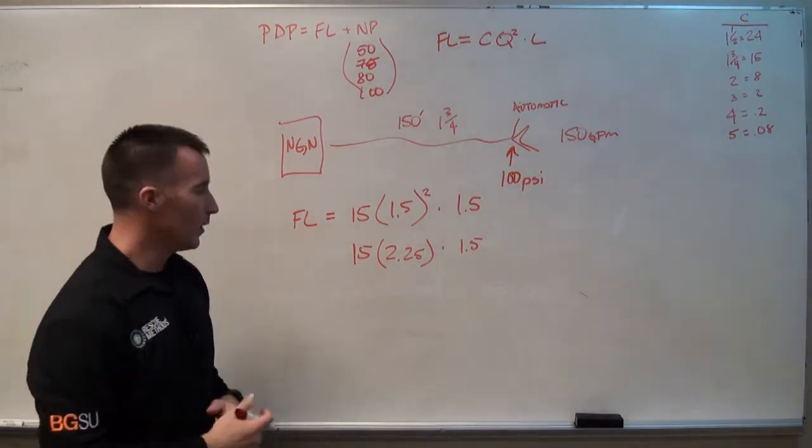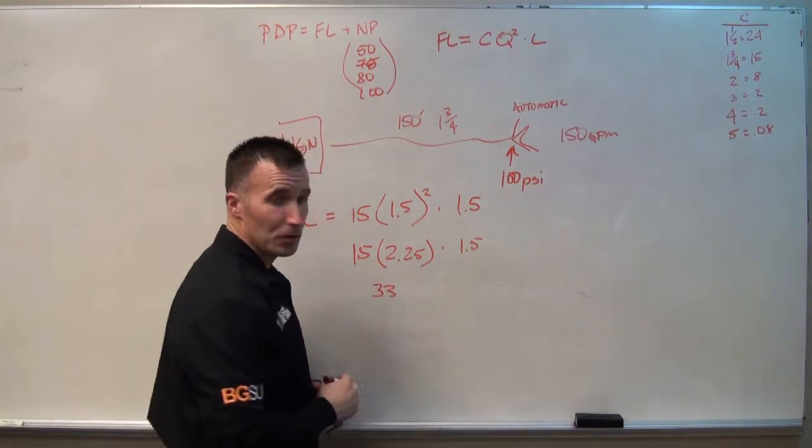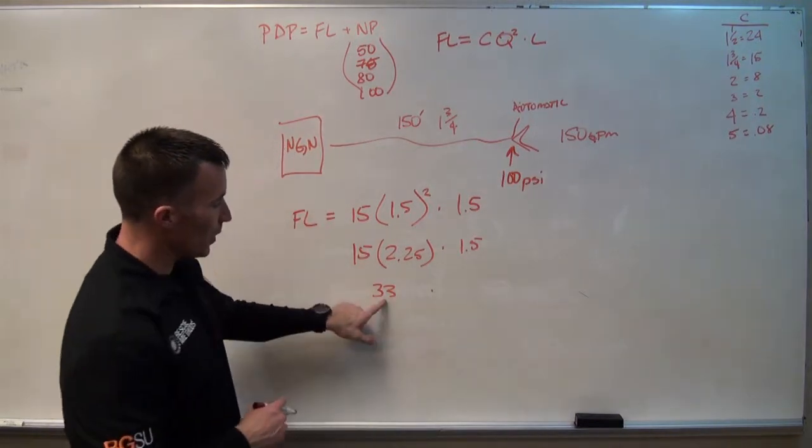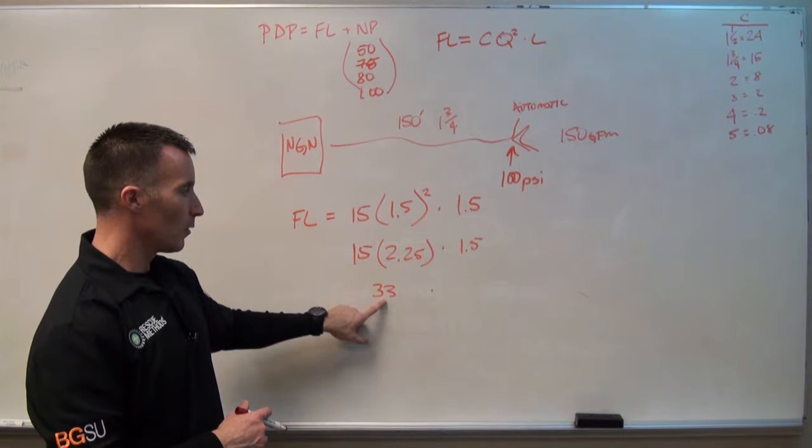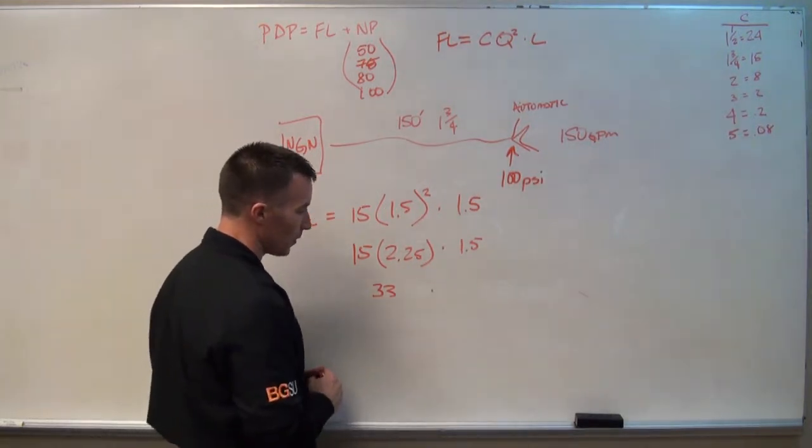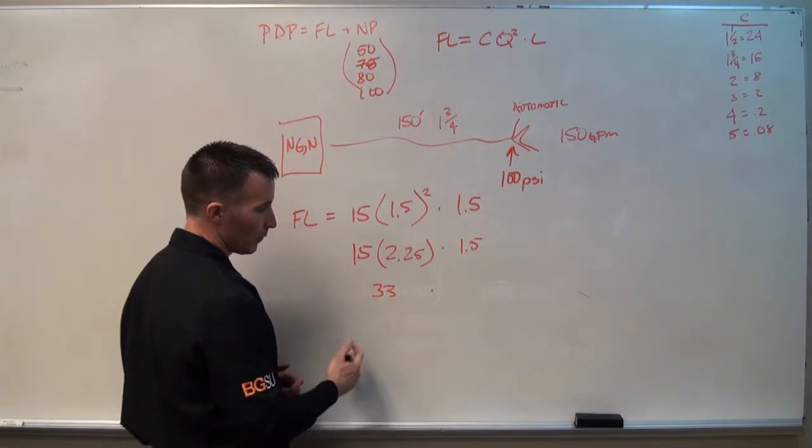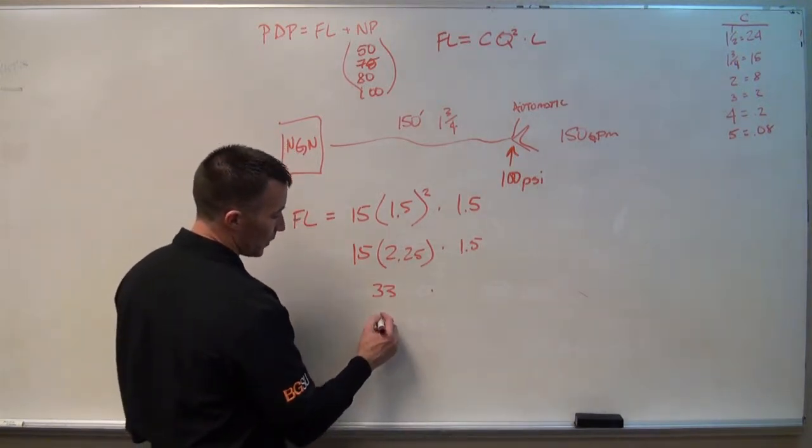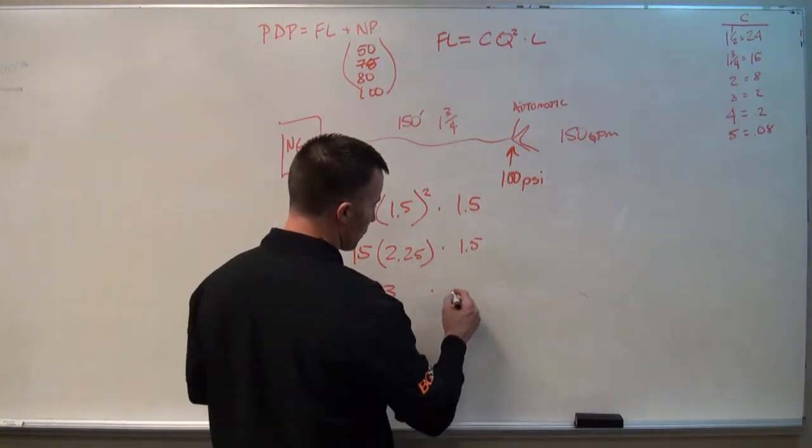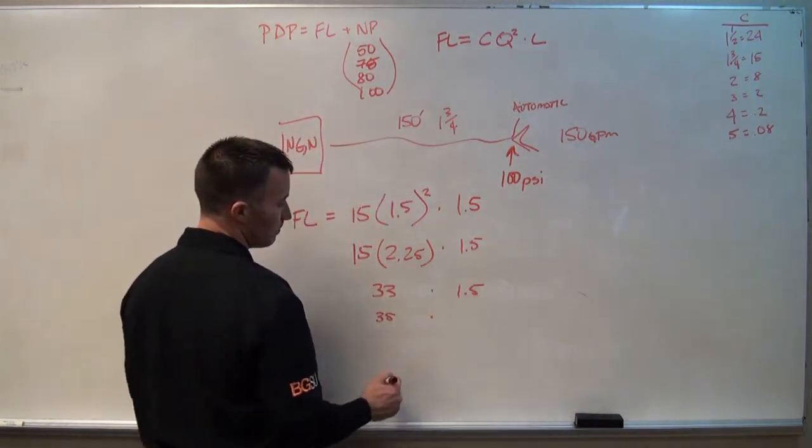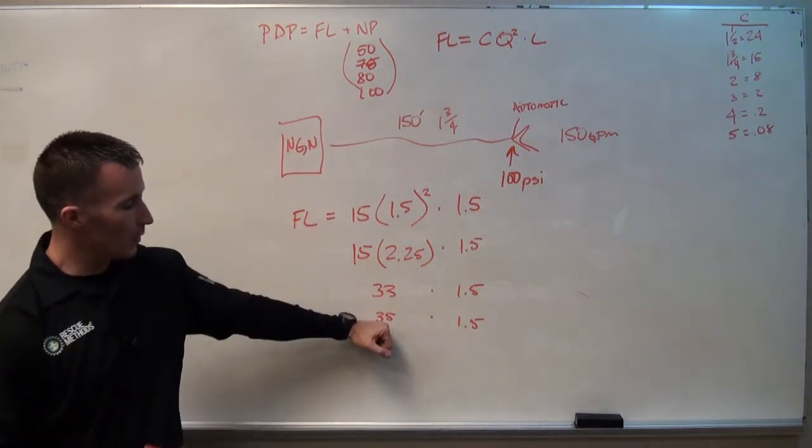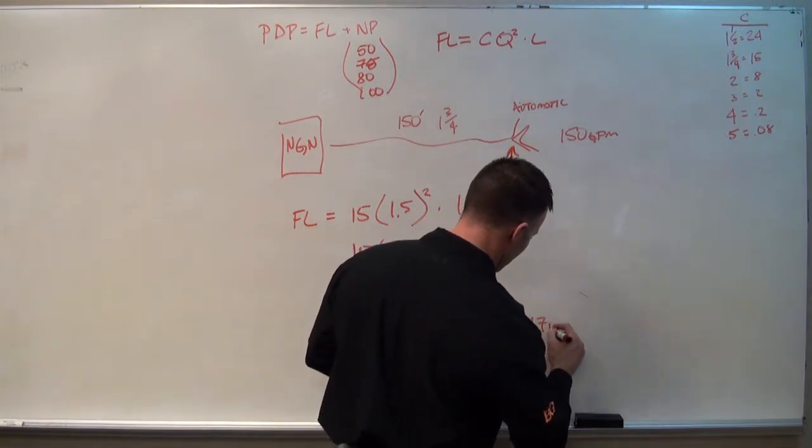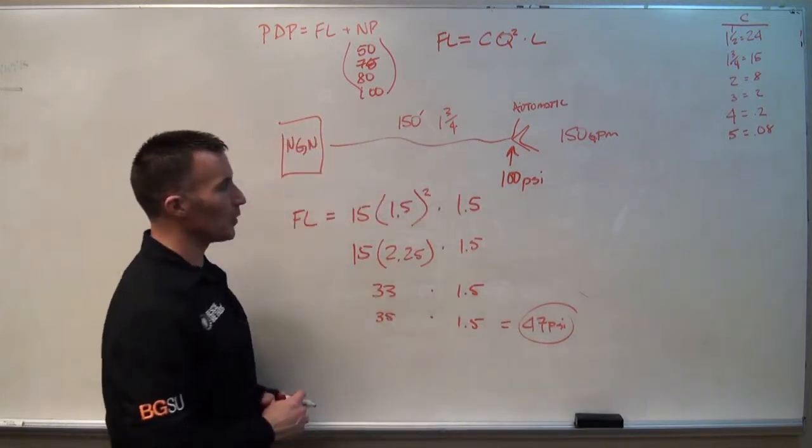Well, 15 times 2.25 ends up being like 33 pounds and change. When we start looking at oddball numbers like 33 or 31, what we really need to be doing is rounding those up to the nearest 5 or down to the nearest 5 if it's close. Typically if it's less than 2, I round it down. If it's more than 2, I'll just round it up. So in this case, we're going to end up with 35, multiply that times 1.5. So 17 and 35, we end up with 47. 47 is our friction loss component.